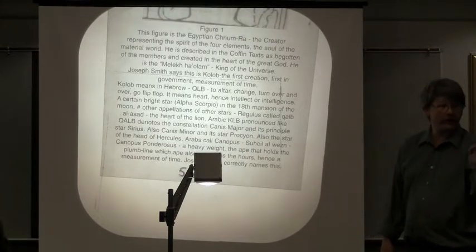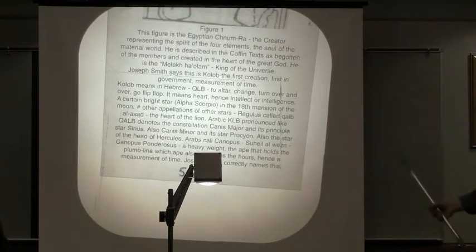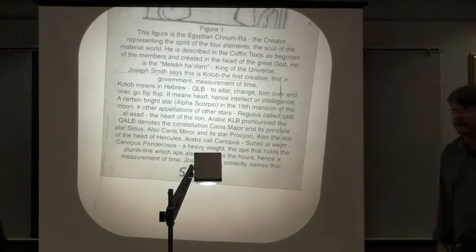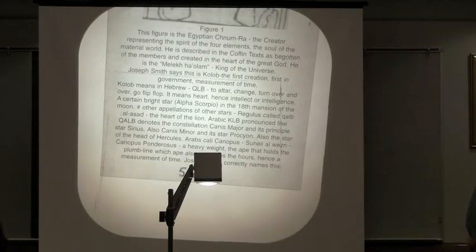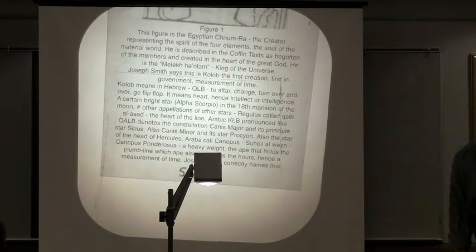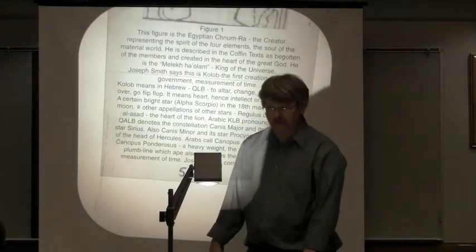It's a certain bright star. Here comes the astronomy again. We'll never get out of the astronomy with this stuff. Alpha Centauri, Alpha Scorpio, in the 18th mantle of the moon. There's other appellations of other stars. Regulus is called Kolb al-Assad, which is the heart of the lion. The Arabic Kolb is pronounced like Kolb. You know, it's the constellation Canis Major. And as the principal star has Sirius and the star Procyon. The Arabs called Canopus Suhail al-Waising, Canopus Ponderosus, a heavy weight. It's the egg that holds the plumb line, which measures the hours, and hence it's a measurement of time. Joseph Smith said it was a measurement of time.